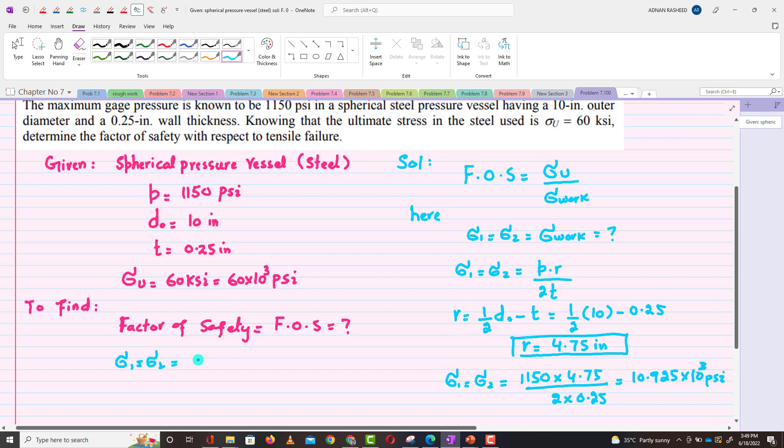Or you can say that σ₁ = σ₂ = 10.925 ksi. Now you have σ₁ and σ₂ that is acting as working stress.